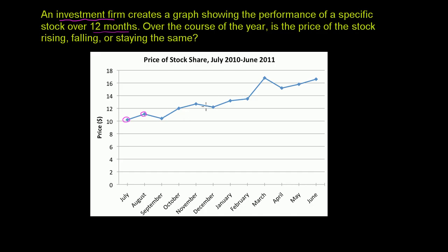This type of graph right over here is called a line graph, because you have the data points for each month and then we connected them with a line. The reason why we connect them with a line is to really see if there's some kind of a trend here, to really show that you have something that's moving from one price to another.